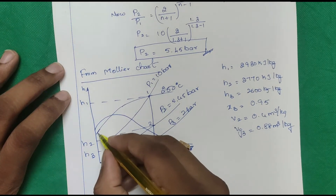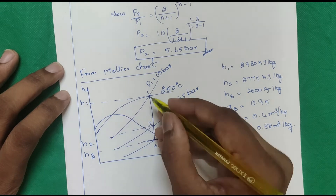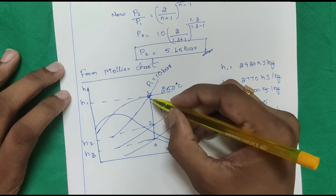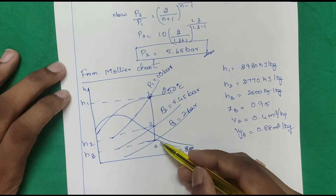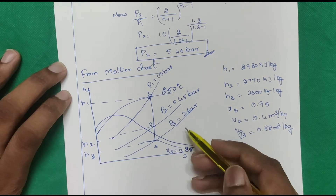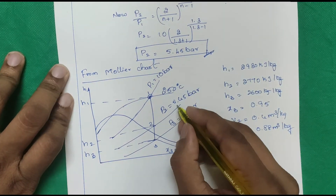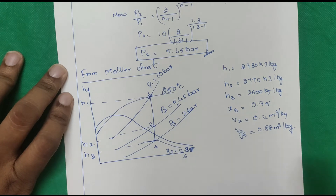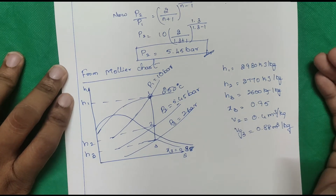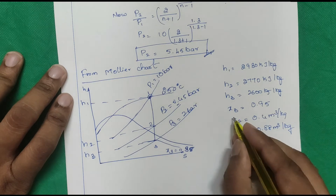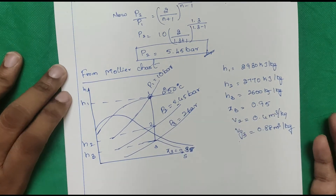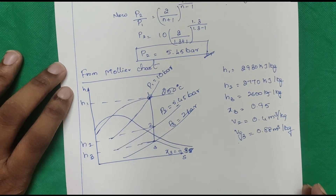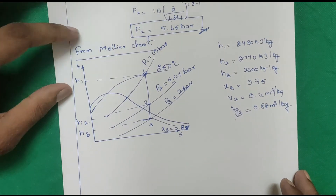On the Mollier chart for Problem 2, locate 250°C and 10 bar — their intersection is point 1. Draw a vertical straight line down to 2 bar (point 3). The intermediate pressure p2 = 5.45 bar is above the saturation line (superheated), so no dryness fraction x2 is needed. Only find x3 and vg3 at the exit. This is how to read the Mollier chart for this case.